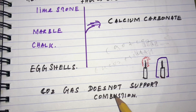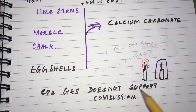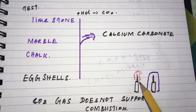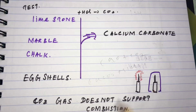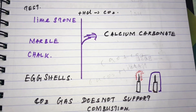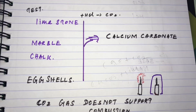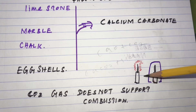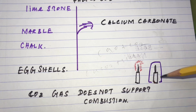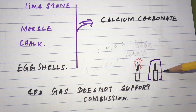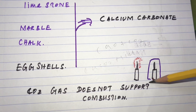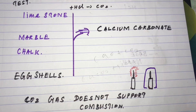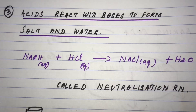Carbon dioxide gas does not support combustion. To identify carbon dioxide: if you bring a burning candle near it and enclose it, the candle extinguishes because of the absence of oxygen — this shows that carbon dioxide does not support combustion.